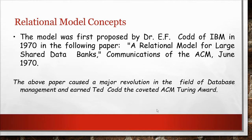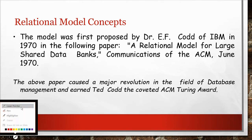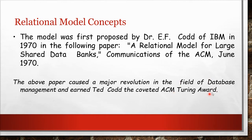The relational model was first proposed by Dr. E.F. Codd of IBM in 1970 through one of his research papers. On the basis of this research paper he was also awarded the Turing Award, which is one of the highest awards in computing. The Turing Award and Turing machine were named after Alan Turing, one of the greatest mathematicians, who discovered a machine to decrypt messages during the Second World War.